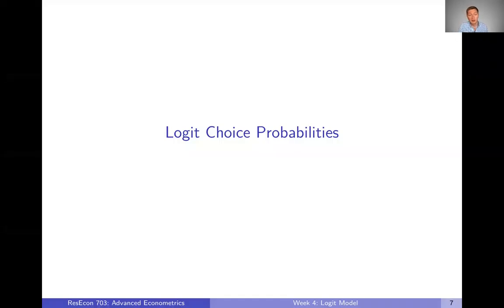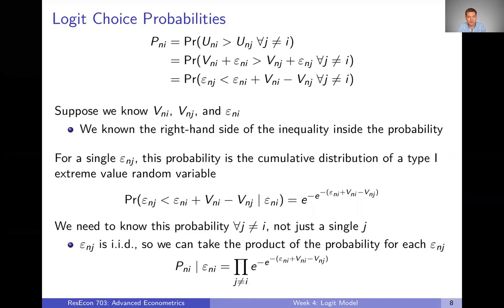In the last video, we talked about the assumption of the Logit model that all of our random unobserved utility terms are IID type one extreme value. The reason we make that assumption is that it gives us some really simple closed form expressions for choice probabilities. So let's look at what those are.